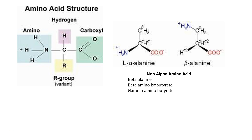Amino acids form the building blocks of proteins. The basic structure of an amino acid consists of a central alpha carbon which is connected to an amino group, carboxyl group, hydrogen, and the variable R group.